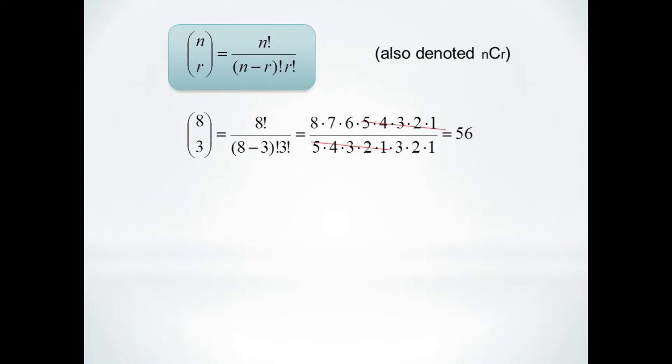Now the 5 factorial cancels most of the numerator, and 3 times 2 cancels the 6. So we're only left with 8 times 7, which is 56.